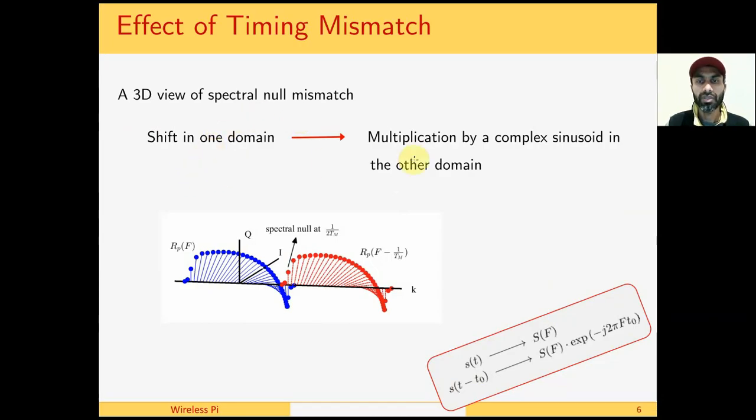We again seek help from our old friend: the shift in one domain is multiplication by complex sinusoid in the other domain. Remember that we said that if we have to shift the carrier frequency of a signal, we multiply it with a complex sinusoid through a local oscillator to shift that frequency. Similarly, when we shift in time domain, we have a multiplication by complex sinusoid in frequency domain. It's a very similar principle. So the complex sinusoid rotates these parts of spectrum of our signal in this direction and these ones in the other direction.